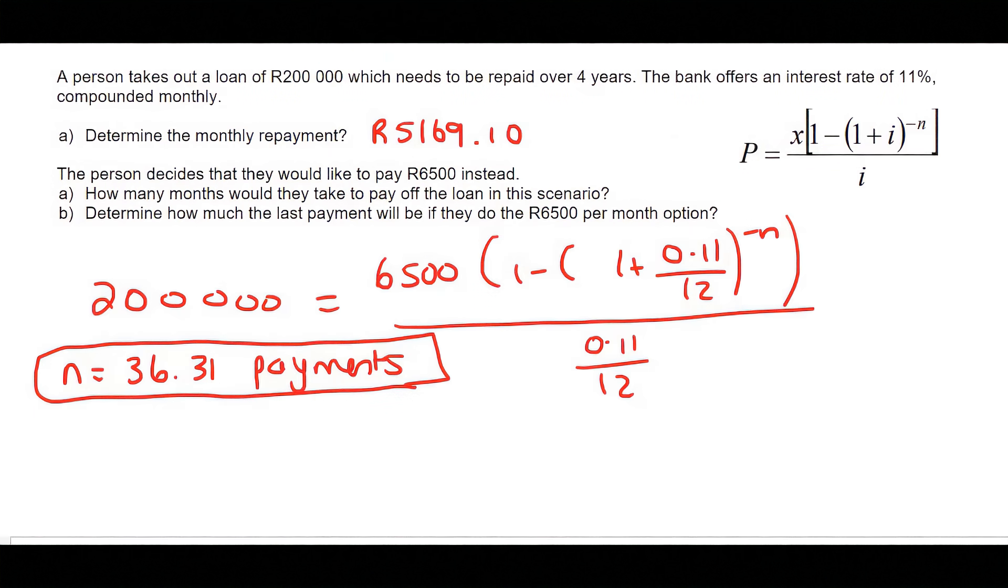Moving on to question C—I apologize, that is meant to be question C. We need to work out how much the last payment will be. Some of you might be saying, isn't it 6,500? Well, no, because they're making 36.31 payments. You can't make 0.31 payments, but what that mathematically means is that last payment is going to be a little bit less than 6,500. There are two ways that we can do this now.